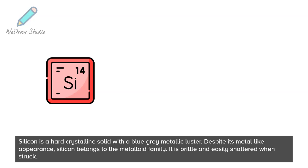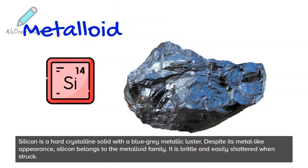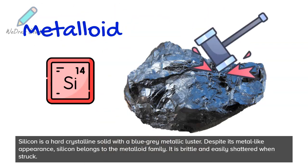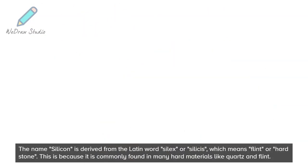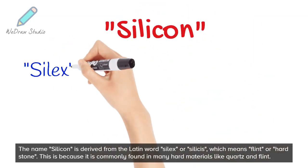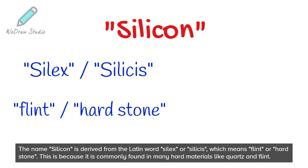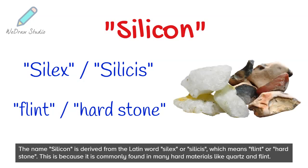Silicon is a hard crystalline solid with a blue-gray metallic luster. Despite its metal-like appearance, silicon belongs to the metalloid family. It is brittle and easily shattered when struck. The name silicon is derived from the Latin word silex or silicis, which means flint or hard stone, because it is commonly found in hard materials like quartz and flint.